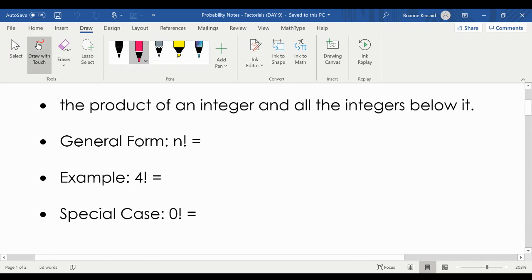Remember, product means to multiply, and integers are just whole numbers. So our general form is n factorial, and then the exclamation point means factorial. So what you would do for that is you would do n times one integer below, that would be n minus 1, times an integer below, that would be n minus 2, times n minus 3.